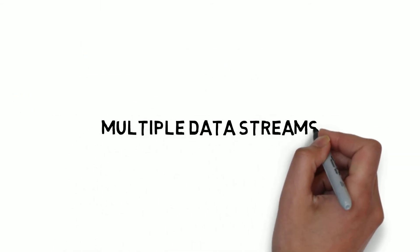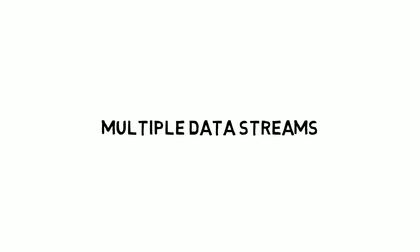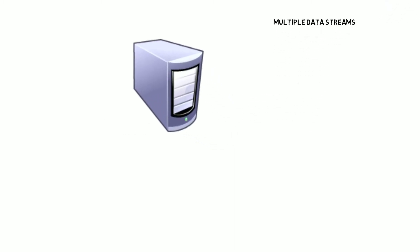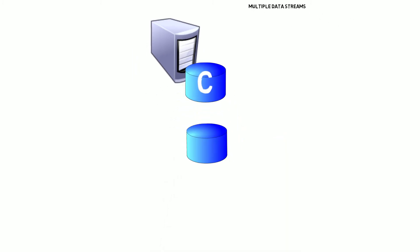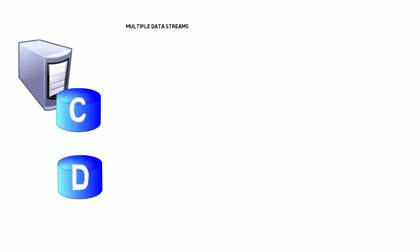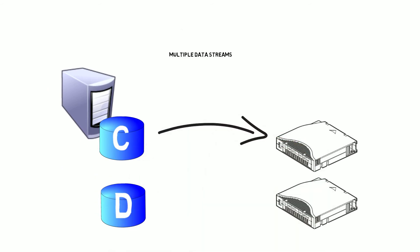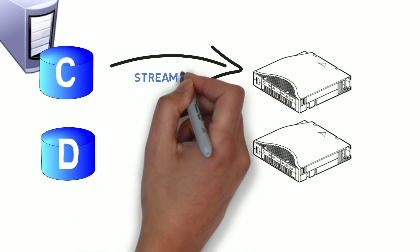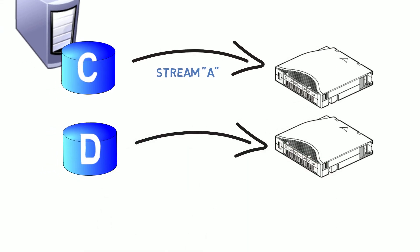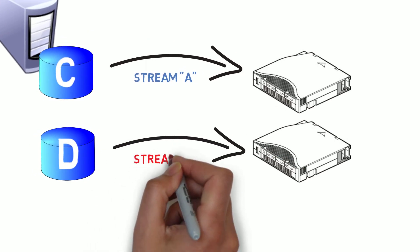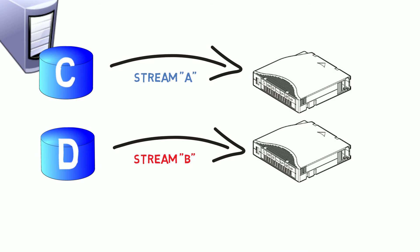Now let's talk about multiple data streams. Multiple data streams allow you to stream data from multiple disk drives or machines concurrently to individual tape drives. In this scenario, maybe you have a Windows server that has a C drive and most likely even a D drive. And with only two tape drives available, how could you backup these disks with multiple data streams? Utilizing multiple data streams, you would stream your C drive — stream A — to one tape drive, and also stream your D drive — stream B — to another tape drive.